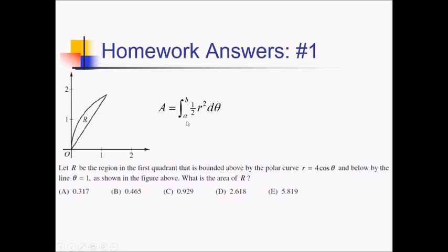The lower limit is 1 — that's our angle we're starting at — and we're going from 1 to pi over 2, since this goes all the way back to 90 degrees. And what's the r on this one? It's going to be just this r they gave us, so 4 cosine of theta. We'll square that and take half of all that, and we're going to do that on the calculator, because this is a calculator problem.